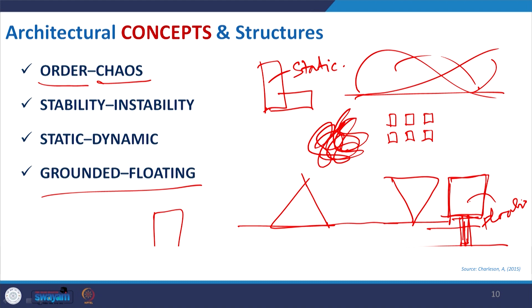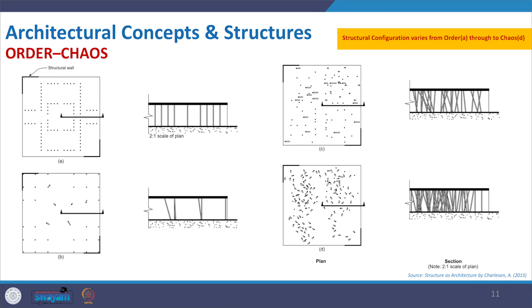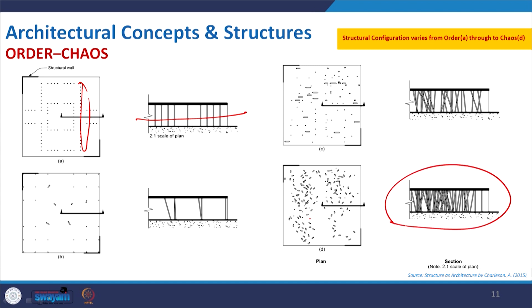Let us understand through different case studies. This is a nice example from the book Structure as Architecture. The concept of making architecture from order to chaos — how it changes. In this plan, the dots are all columns and they are placed in order, creating a very ordered-form architecture. Then when you start rotating toward B it is moving to chaos, and finally when you make it very random it creates this picture. This is the conceptual image.